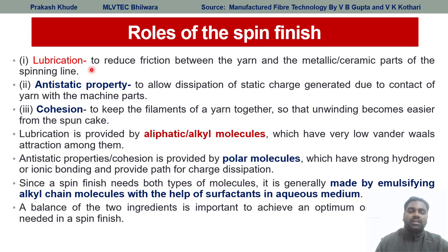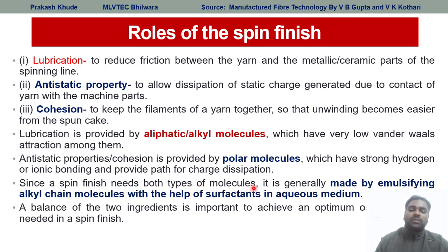If you want to achieve all three properties, different molecules are necessary. Lubrication can be provided by aliphatic or alkyl molecules which have low van der Waals forces. Anti-static and cohesion properties are provided by polar molecules which have strong hydrogen and ionic bonding, and that will provide the path for charge dissipation. Since spin finish needs both types of molecules — aliphatic alkyl molecules and polar molecules — it is generally made by emulsified alkyl chain molecules with the help of surfactant in an aqueous medium. So balancing between these two ingredients is much more important to achieve the optimum properties needed in the spin finish.